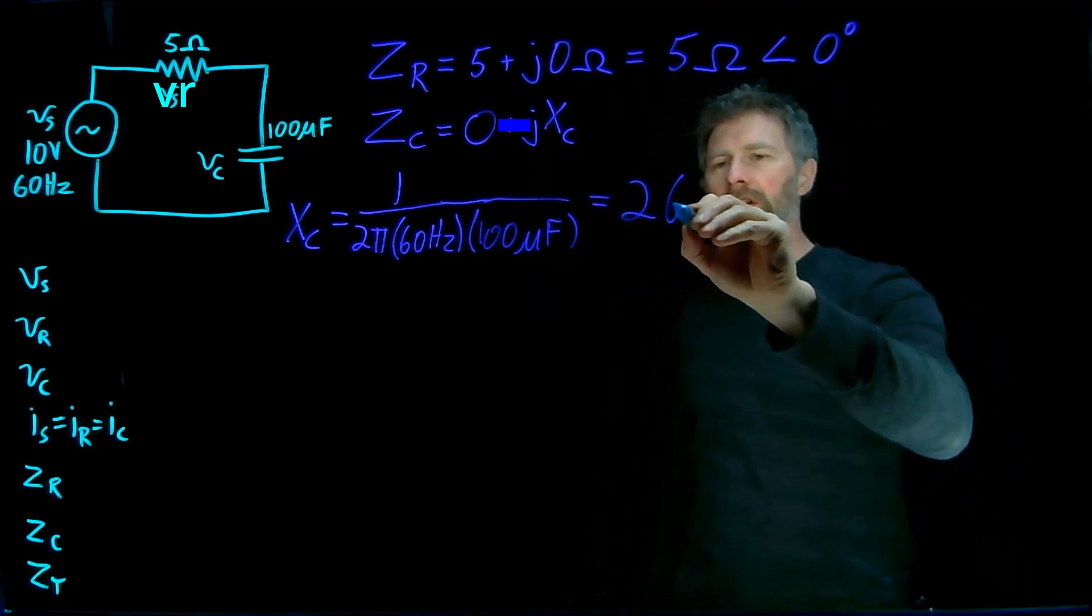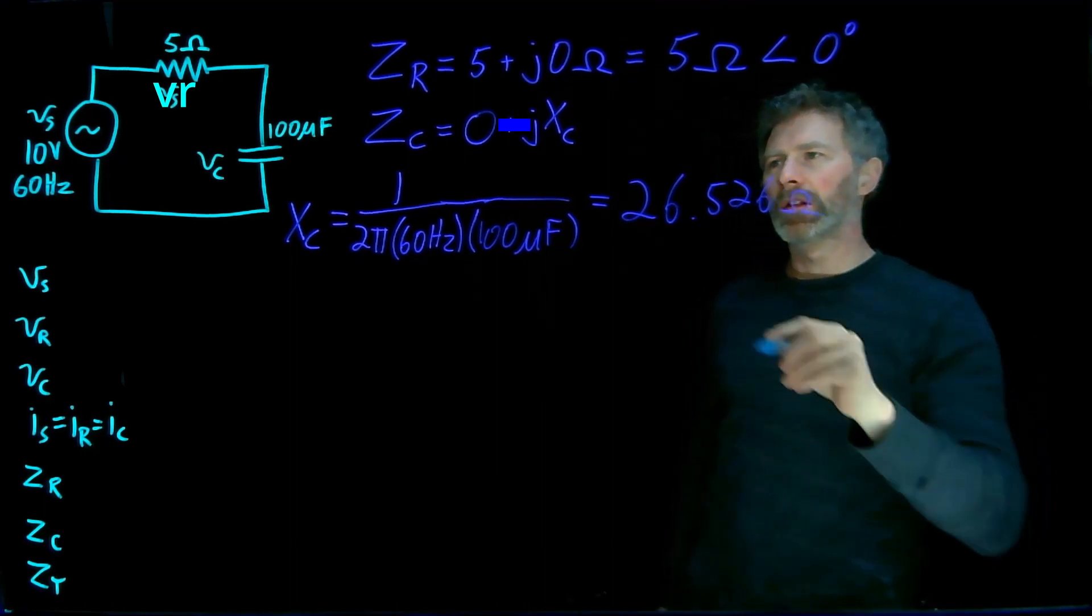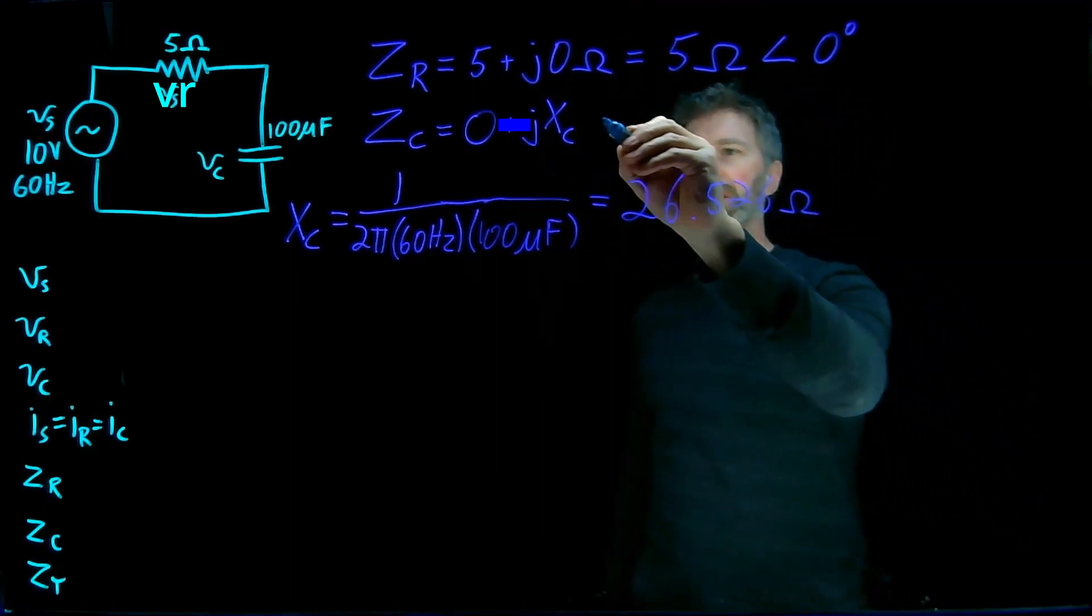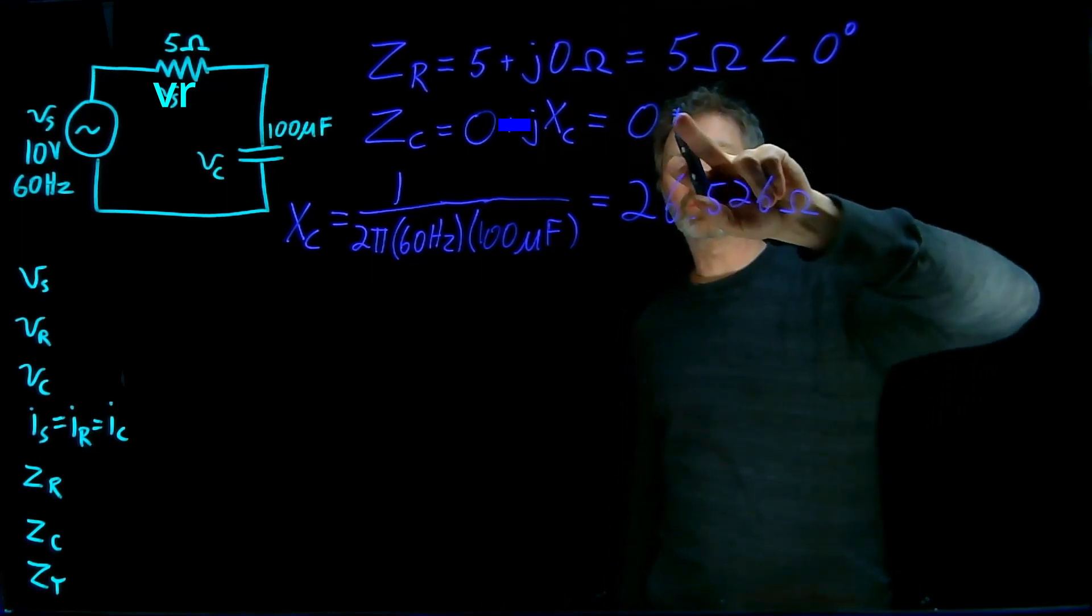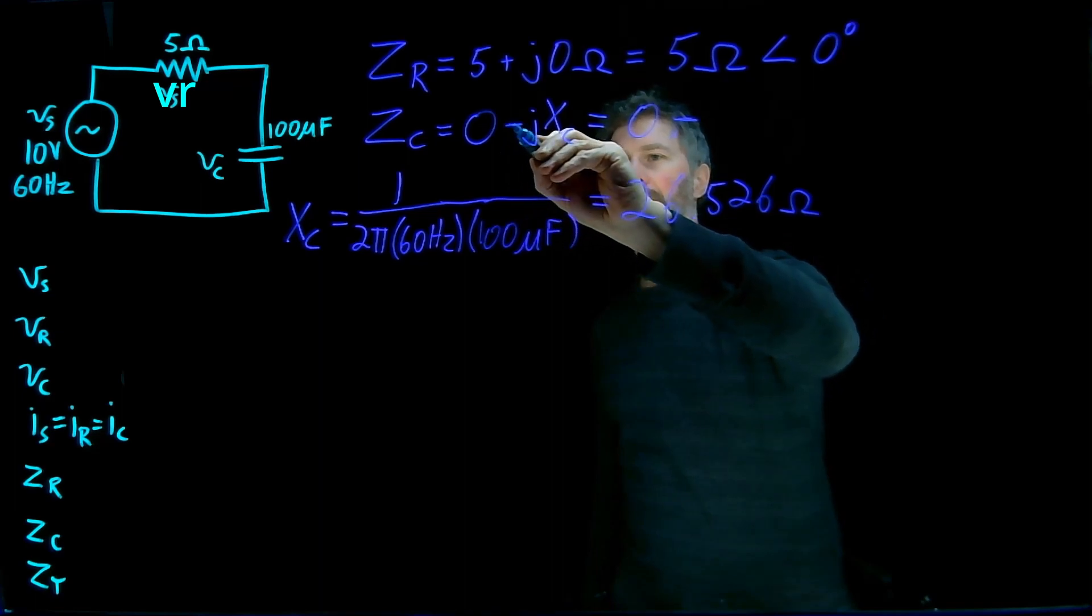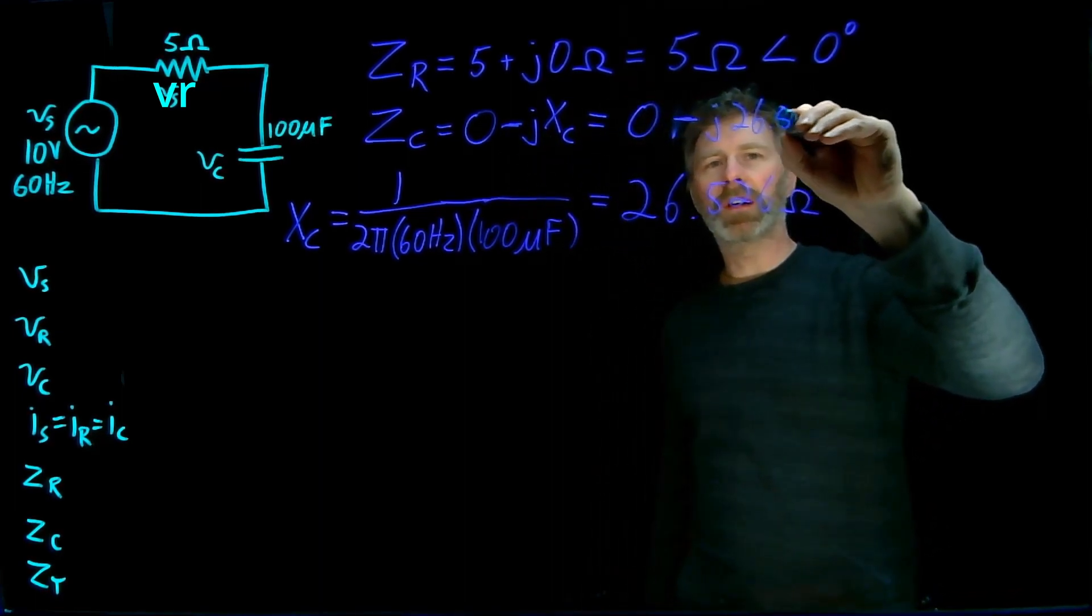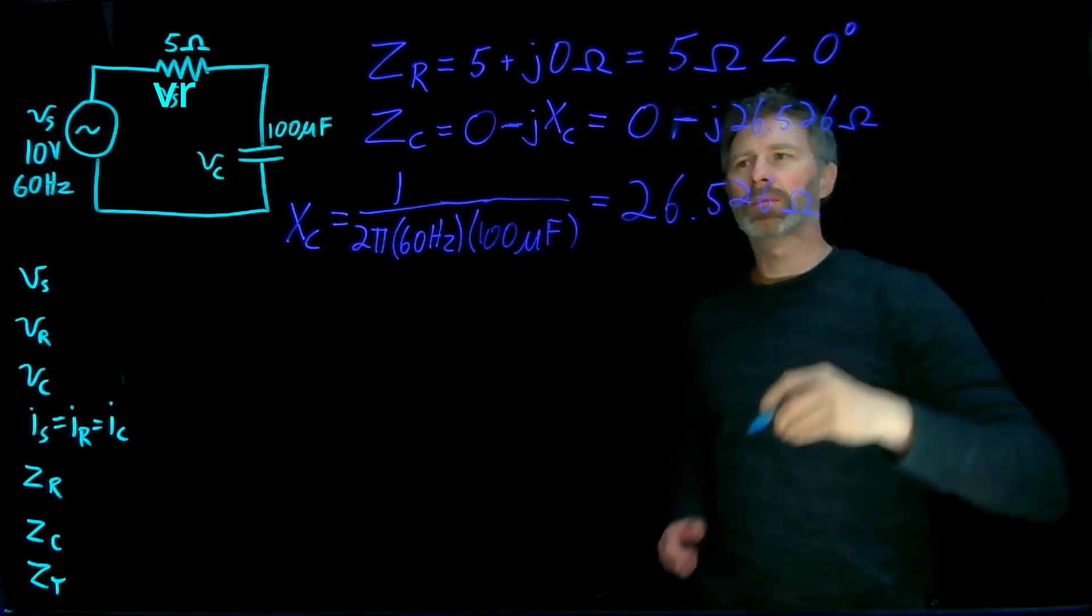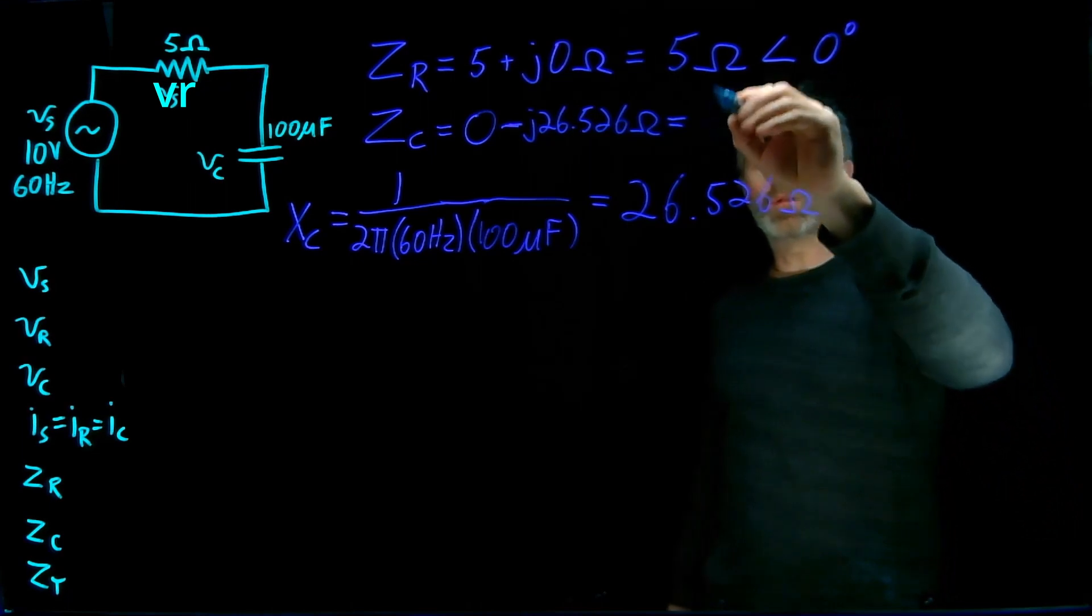If we plug these numbers into a calculator, we get 26.526 ohms. So that's the reactance, which means the impedance is zero, actually that's minus, isn't it? This should be minus. Minus j 26.526 ohms, which equals in polar notation 26.526 with a phase angle of minus 90 degrees.